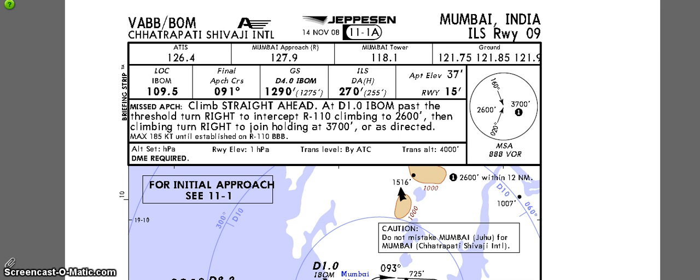So today what I have here is a Jepsen approach plate for Mumbai, India. I'll be going through the basic symbology which you'll be seeing in any approach plate published by Jepsen.